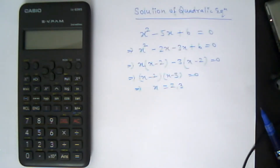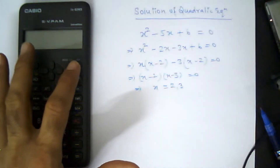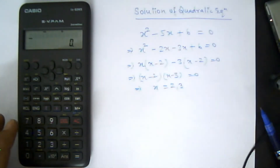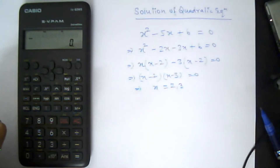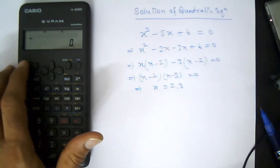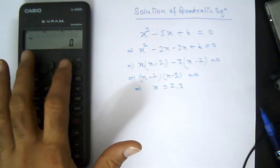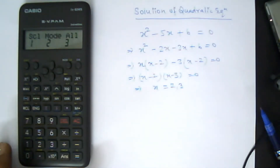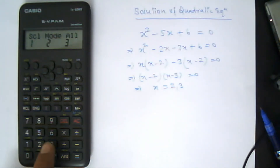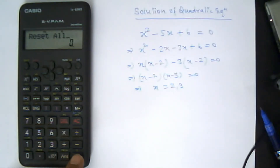First, turn on the calculator. Before using it for the solution of a quadratic equation, we should always erase all memory and clear all pre-recorded data. To do that, press Shift, then press Mode. Three options will appear — press 3 to reset all data.